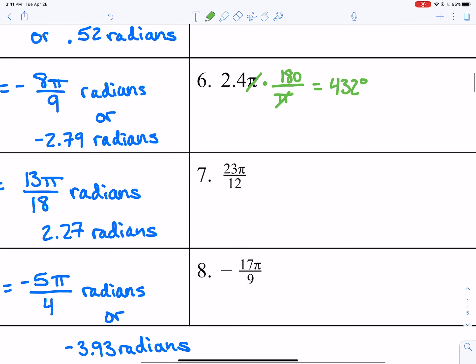Let's do another one. We have 23 pi over 12. Put pi in the denominator, so it's 180 over pi for the conversion factor. And you want to multiply 23 times 180 divided by 12. So 23 times 180 then divided by 12 would give me 345 degrees.